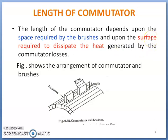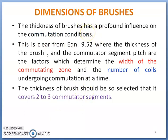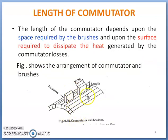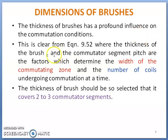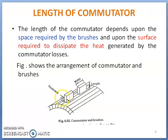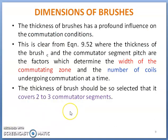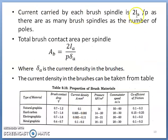Sufficient area is needed to properly dissipate heat from commutator losses during energy conversion. The thickness of the brush has a pronounced influence on commutation conditions. The thickness of the brush and commutator segment pitch determine the width of the commutating zone and the number of coils undergoing commutation at a time. The brush thickness should be selected so that it covers two to three commutator segments on the outer surface of the commutator.